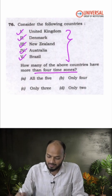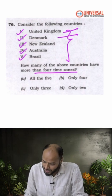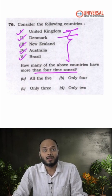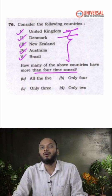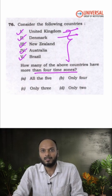So here the correct answer is UK has more than four time zones. Denmark also has more than four time zones. Reason being, Denmark also has territories like Greenland and other islands as well in the Atlantic Ocean.